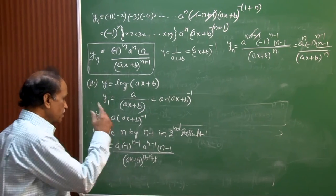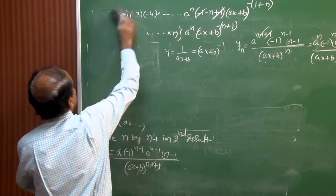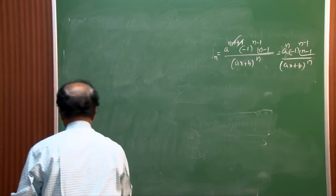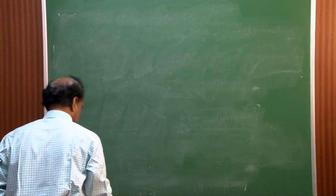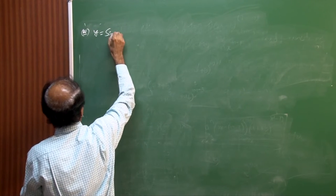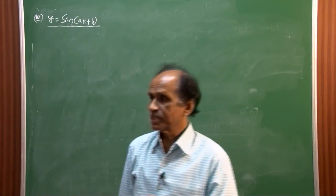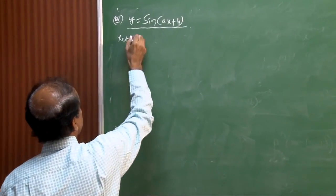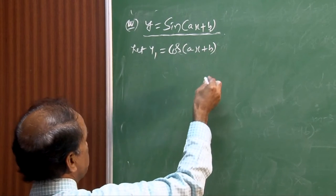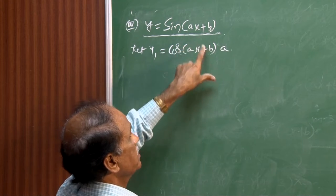Result 4: y = sin(ax + b). The first-order derivative is y₁ = cos(ax + b) · a. Using the allied-angle identity sin(90° + θ) = cos θ, we can rewrite this as y₁ = a · sin(ax + b + π/2).